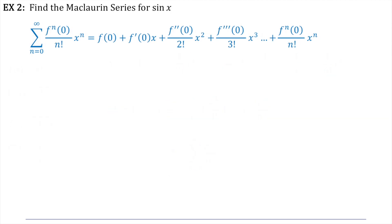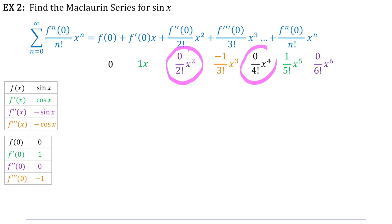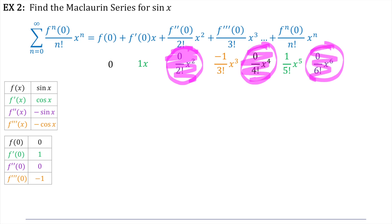Let's do the same thing for sine of x — a Maclaurin series for sine of x. So again, we'll start with the derivatives of sine of x, then plug in zero for each of those, and pop those into our Taylor polynomial in the appropriate places. You can probably see a pattern developing. Just notice that all of the even ones have a zero on the top, so all of these even ones actually just disappear, and we're only left with odd powers.